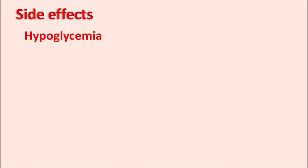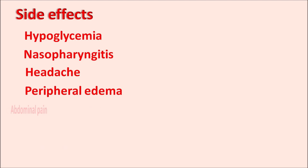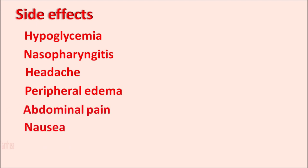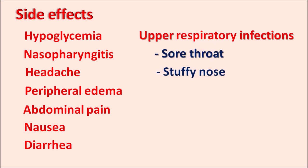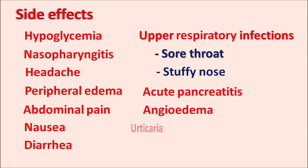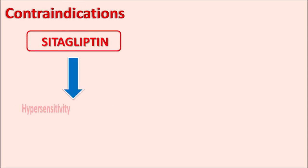The important side effects of cetagliptin include hypoglycemia, nasopharyngitis, and upper respiratory tract infections. Other side effects include headache, peripheral edema, abdominal pain, nausea, and diarrhea. Upper respiratory infections may produce sore throat and stuffy nose. Acute pancreatitis, angioedema, urticaria, and skin rashes can also be observed with cetagliptin.